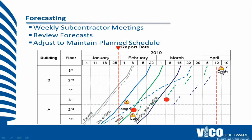That forecast shows a potential couple of weeks' delay at the end of the contract if we don't act. Another opportunity that the location breakdown structure provides, understanding that the same crew works from one location to the next, is using that to forecast production in future locations — which is a huge benefit in identifying production problems ahead of time.